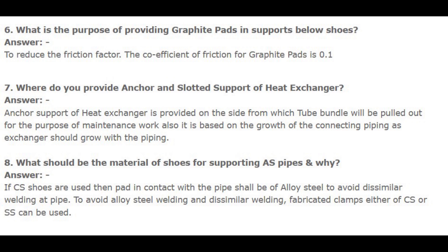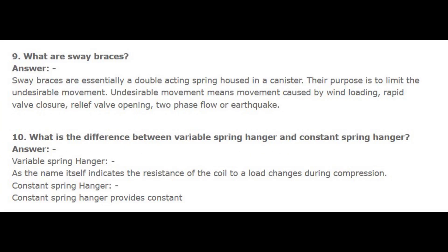Number 8. What should be the material of shoes for supporting alloy steel pipes, and why? Answer: If carbon steel shoes are used, then the pad in contact with the pipe shall be of alloy steel, to avoid dissimilar welding at the pipe. To avoid alloy steel welding and dissimilar welding, fabricated clamps either of CS or SS can be used.